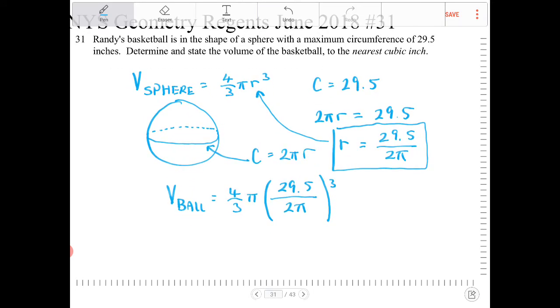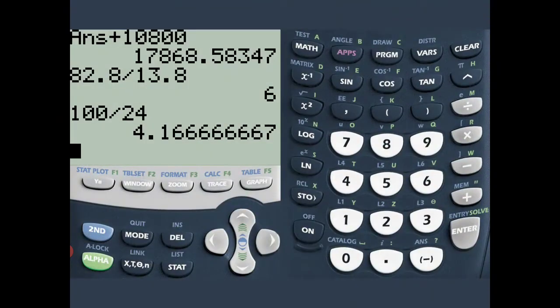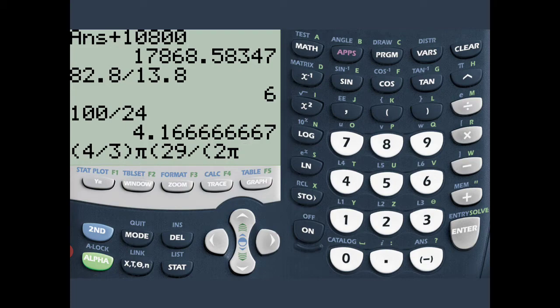So let's take a look. Let's bring our calculator. So I have four thirds which I'm going to enclose in parentheses times pi times r cubed. So r is 29 divided by 2 pi, all to the third power.